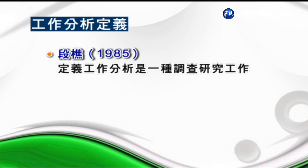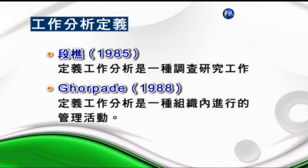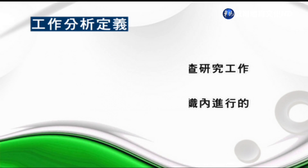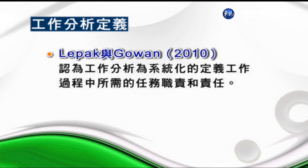工作說明書提供人員招募、徵選、培訓、評核與配置的依據。工作分析是一種調查研究的工作，根據工作的事實，分析及界定執行工作時所需要的知識、技能、經驗及責任程度，並制定執行工作時所需具備的資格條件。工作分析為系統化定義工作過程中所需的任務、職責，以及員工必須具備的能力、知識、技能。